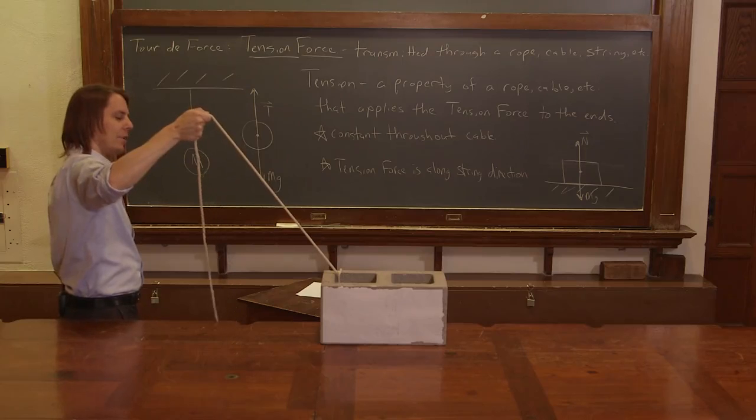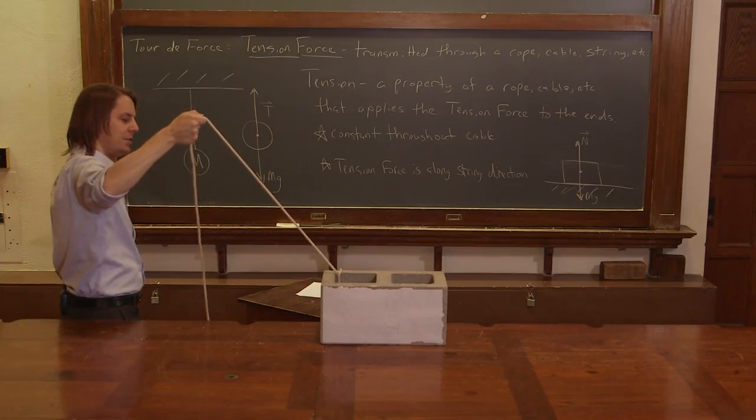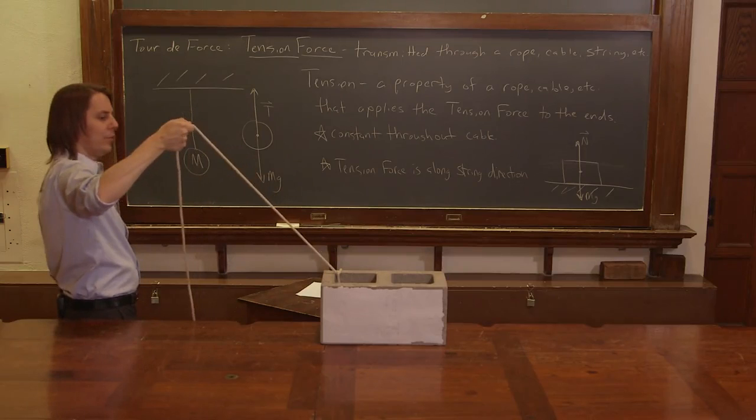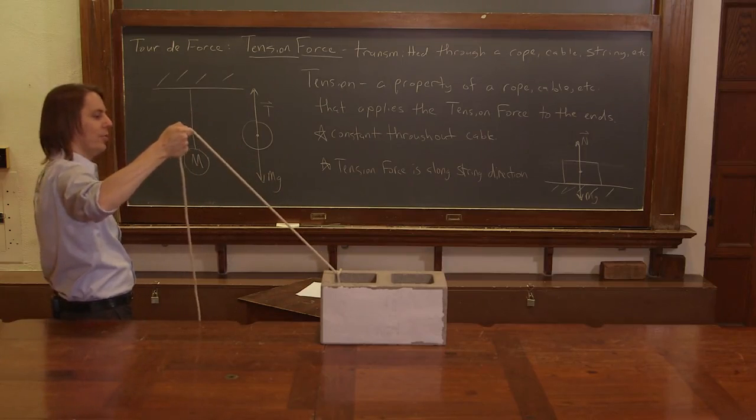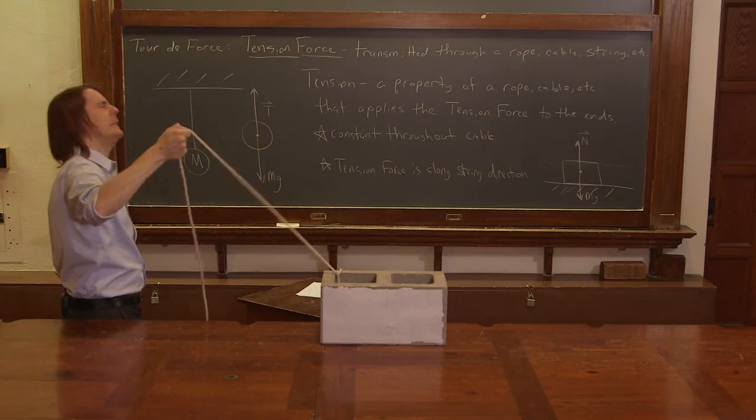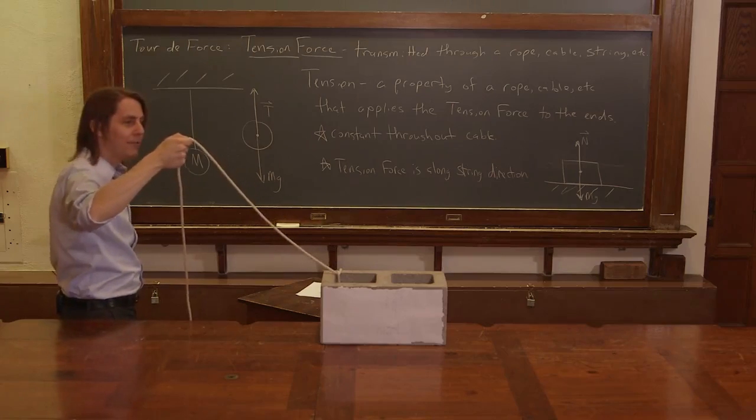But what I want to think about is what if we do this? So here I have a rope, and I have it under tension, and I'm pulling at an angle. So what forces are occurring? I'm applying a new force, and nothing is moving.